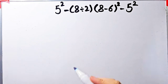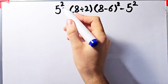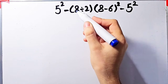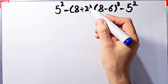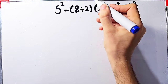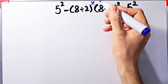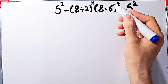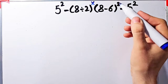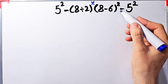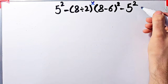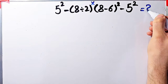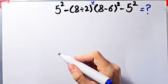Let's solve another question about the PEMDAS rule: five to the power of two, minus open parenthesis eight divided by two, close parenthesis, then times open parenthesis eight minus six, close parenthesis, then all of them to the power of two, minus five to the power of two. What is the answer of this question?